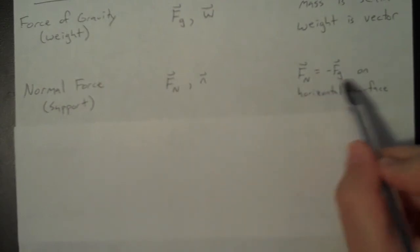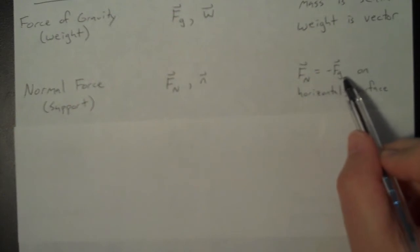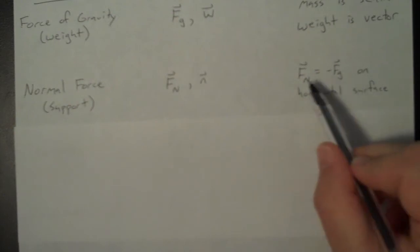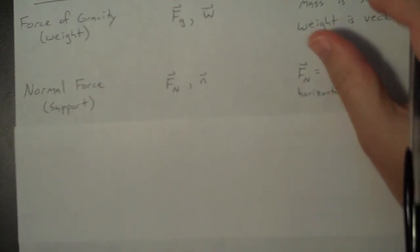And then, this is my main comment for this one, if you are on a horizontal surface and you are not experiencing an acceleration, in other words you're in equilibrium, the normal force is going to counteract and cancel the force of gravity. So they're going to have equal magnitudes, just opposite directions. That's what the negative sign is indicating.